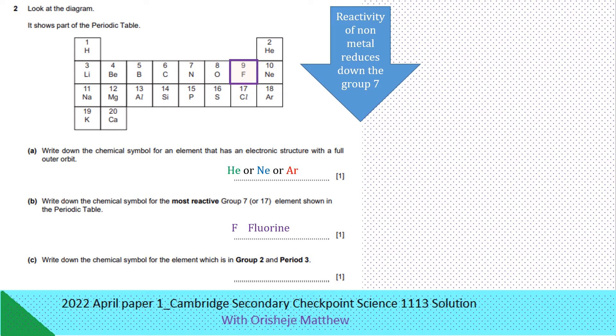Write down the chemical symbol of the element which is in Group 2 and Period 3.